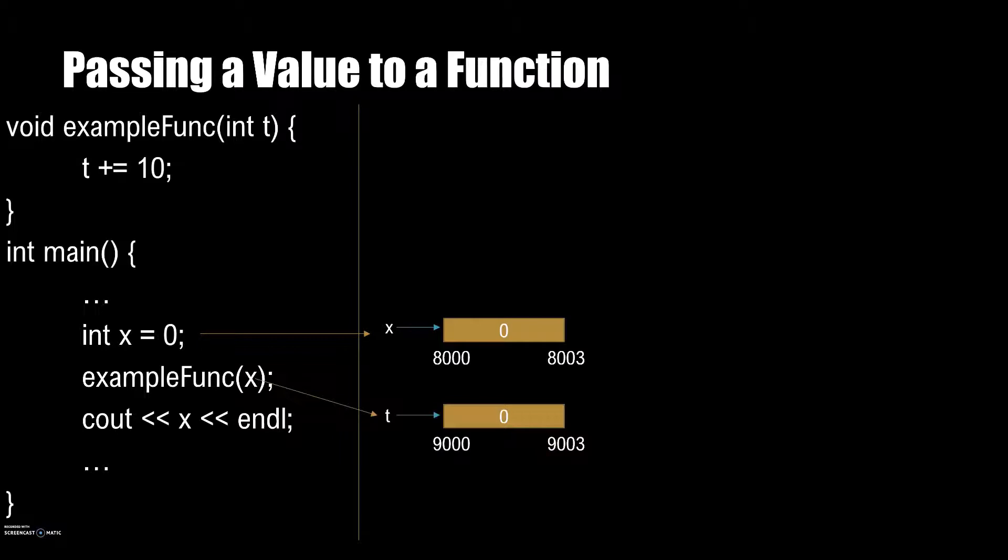Let's take a look at a short example of calling a function and what happens in memory when we do so with a parameter. In this case, we have a function exampleFunc that takes an integer parameter and adds 10 to it and then returns nothing. In main, we instantiate int x and set it to 0. In this case, let's say that x refers to memory location 8000, which now has the value 0 in it due to our initialization.